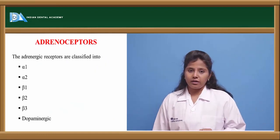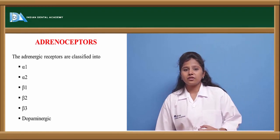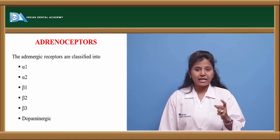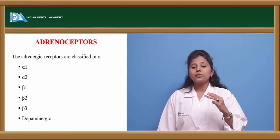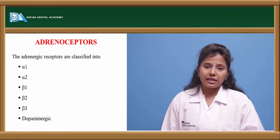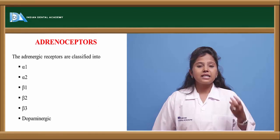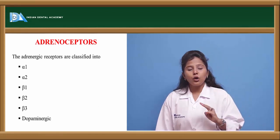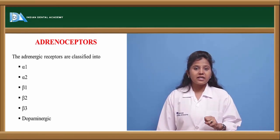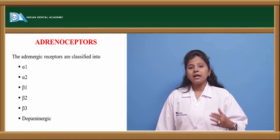What are the various types of adrenergic receptors? There are mainly two types: alpha and beta receptors. Since dopamine is one of the neurotransmitters involved in the adrenergic system, dopaminergic receptors are also considered adrenoreceptors. The adrenoreceptors are categorized as alpha receptors, beta receptors, and dopaminergic receptors. Alpha receptors are further divided into alpha-1 and alpha-2, and beta receptors are classified as beta-1, beta-2, and beta-3.